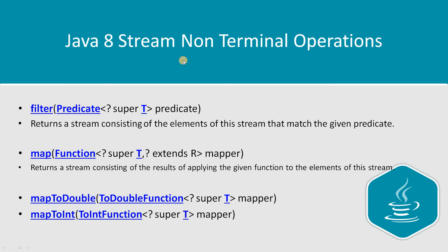First, let's talk about filter. Filter takes a predicate, which is a predefined functional interface — basically a condition. The filter function returns a stream consisting of the elements that match the given predicate. For example, if you have an integer list and want elements greater than five, filter will give you a new stream with all elements greater than five.